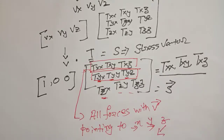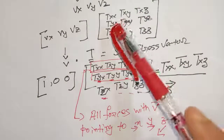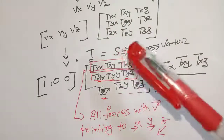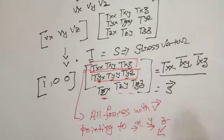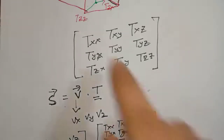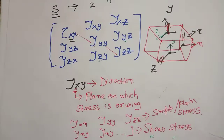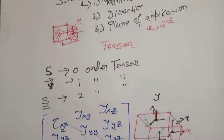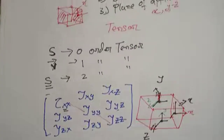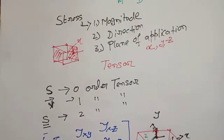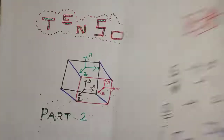I still have more to cover but will pause here, as these two videos make up part two of the tensor series. The next part will cover how to find the actual values of the stress tensor — substituting real values into those indices. To recap: this video showed what the stress vector is and why we use a tensor, because a tensor can denote magnitude, direction, and the plane of application, which a vector alone cannot do.